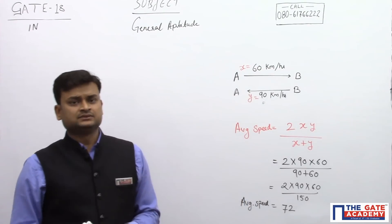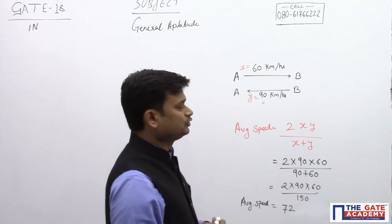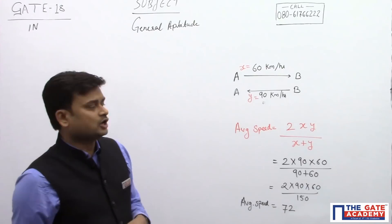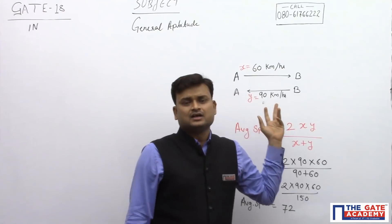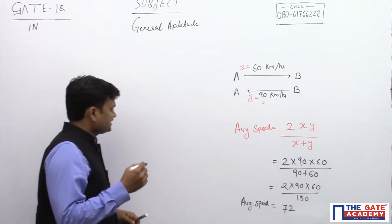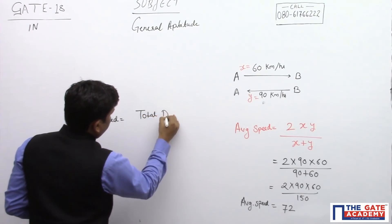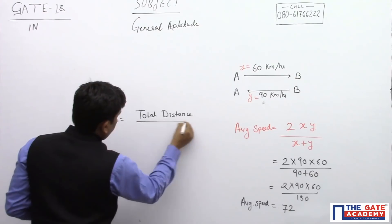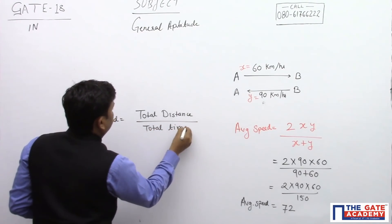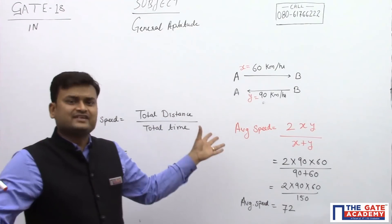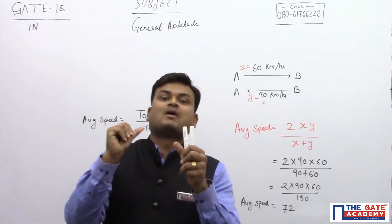Sometimes you don't remember the formula — then you have to use your common sense. The onward speed is 60 km per hour and the return speed is 90 km per hour. Average speed is nothing but total distance divided by total time. Since we don't have any distance given, we have to assume one distance.